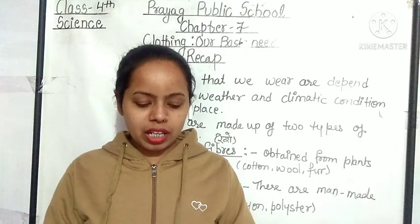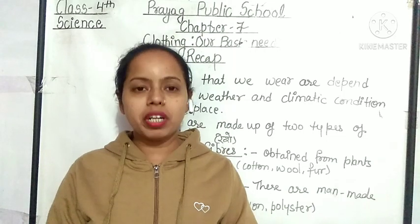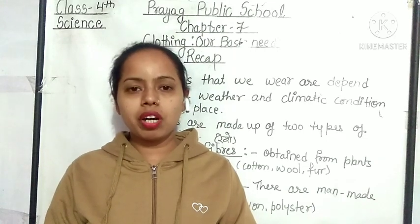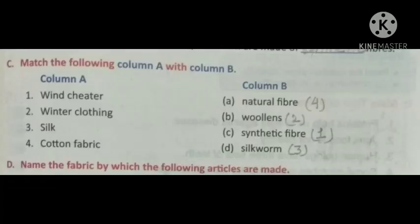Now our next exercise is match the following — Column A with Column B. Winter clothing — woolen; synthetic fiber; silk — silkworm; cotton fabric — natural fiber.